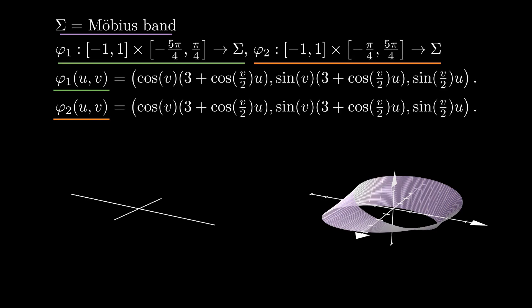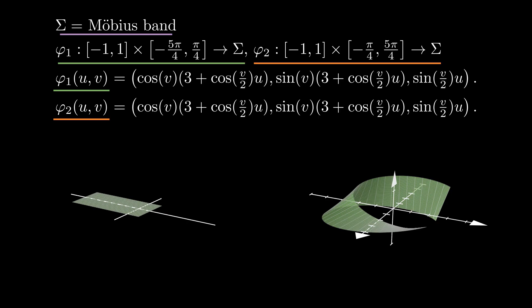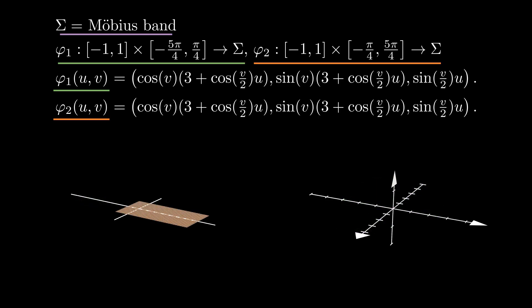If sigma is the Möbius band drawn here, one can use the parametrizations given here to cover the band by two rectangles. Even though the two parametrizations have the exact same formula, we cannot use a single parametrization to cover the entire band as we will see in future lessons. This is somehow related to the fact that the Möbius band only has one side.